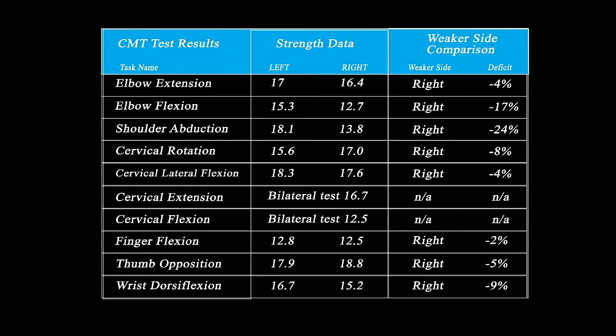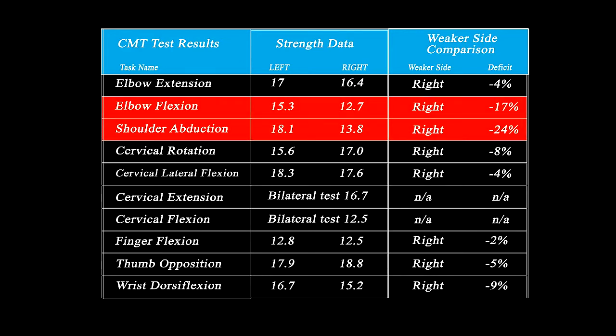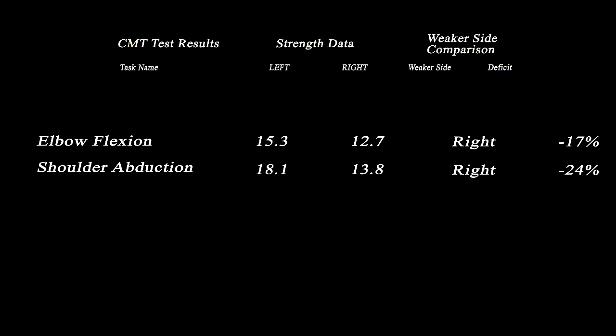After muscle testing our patient, we discover that she has weaknesses in every muscle on the right hand side. However, since only elbow flexion and shoulder abduction were impaired by more than 12.5%, they are the only two considered clinically significant.